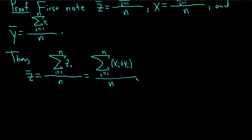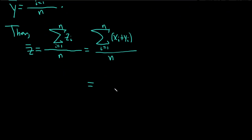So now we can break this up into two sums. So this is equal to the sum of the Xs, and again, from 1 to n. It's all being divided by n. All right, just breaking it up into two sums.